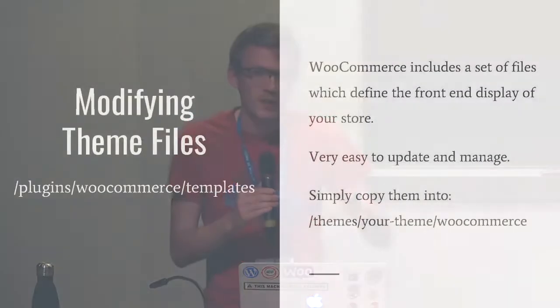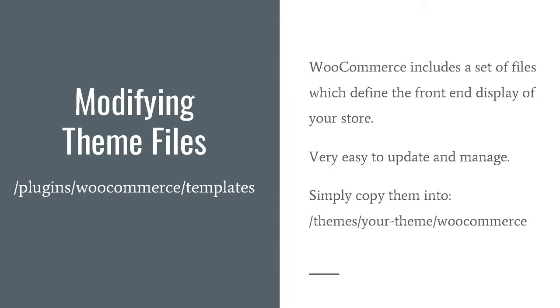There are two main ways to modify your WooCommerce site. First, modifying theme files. Inside the WooCommerce plugin itself, there's a set of theme files you can copy into your own theme. You copy from plugins/WooCommerce/templates, take the file you want, paste it into your theme, create a WooCommerce folder, and maintain the same file hierarchy as within the plugin. This is a simple method — you can go in, add content, remove things, add pictures, add classes. The problem is you then need to maintain these files as WooCommerce evolves.